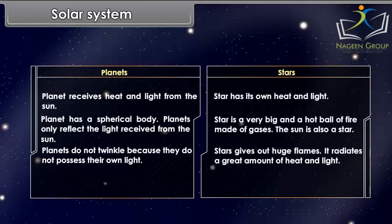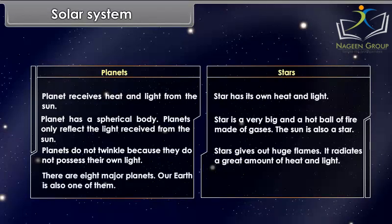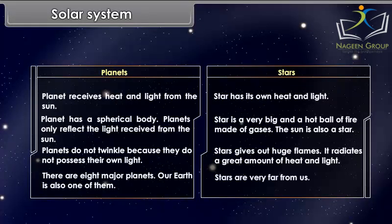A star is a very big and hot ball of fire made of gases. The sun is also a star. Stars give out huge flames and radiate a great amount of heat and light. There are eight major planets, and our Earth is also one of them. Stars are very far from us.